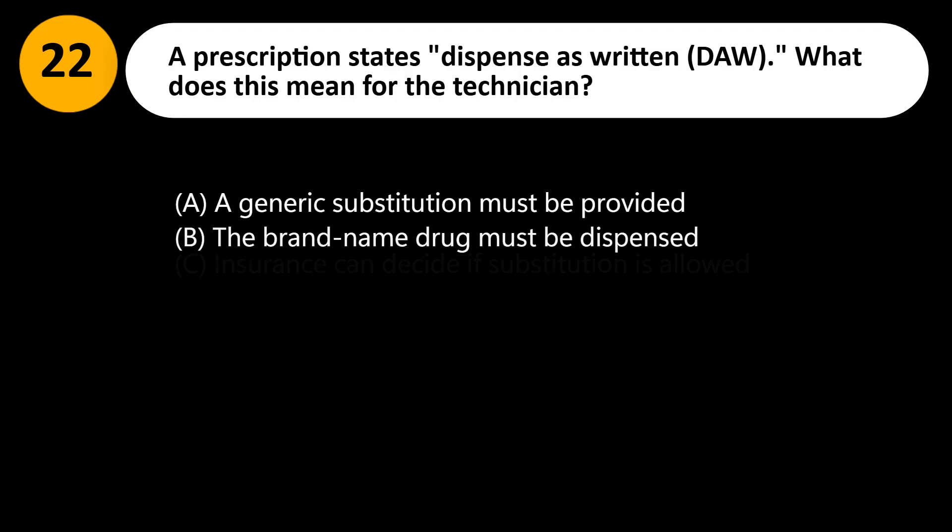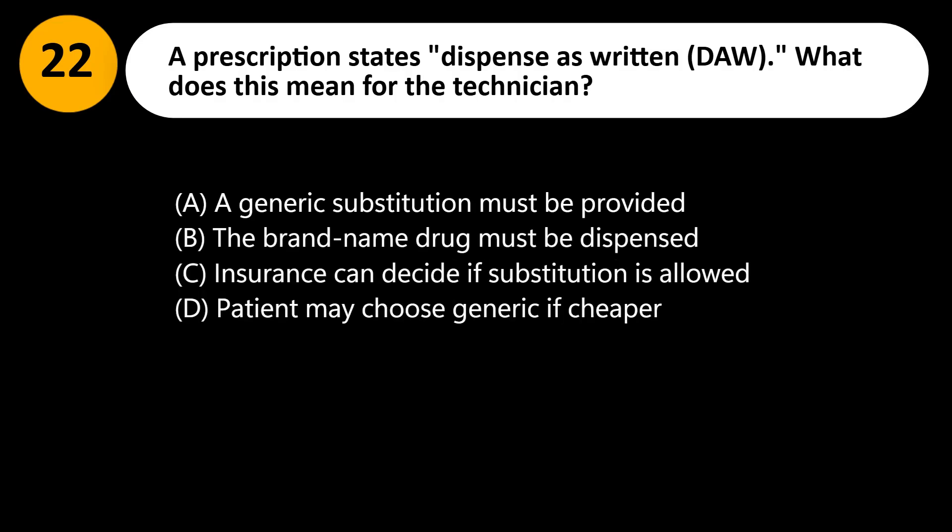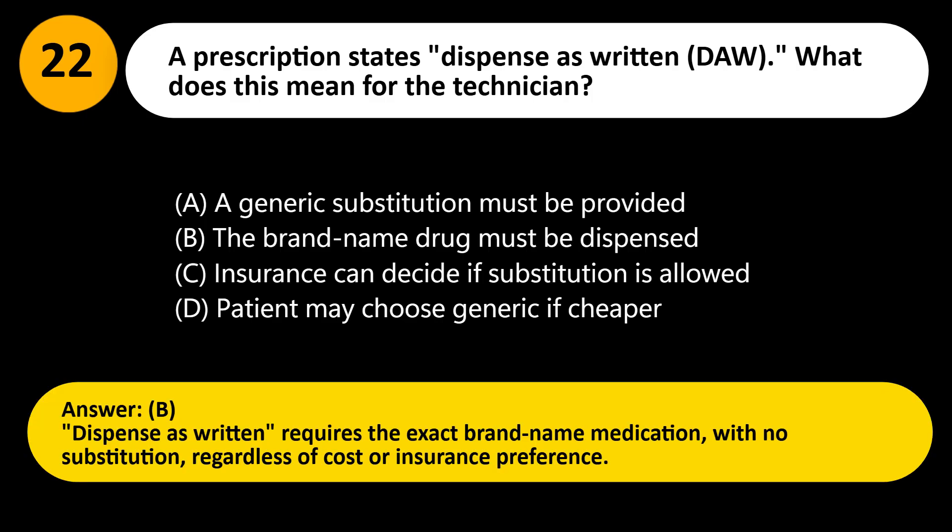A prescription states 'Dispense as Written' (DAW). What does this mean for the technician? A. A generic substitution must be provided. B. The brand-name drug must be dispensed. C. Insurance can decide if substitution is allowed. D. Patient may choose generic if cheaper. Answer: B. Dispense as written requires the exact brand-name medication, with no substitution, regardless of cost or insurance preference.